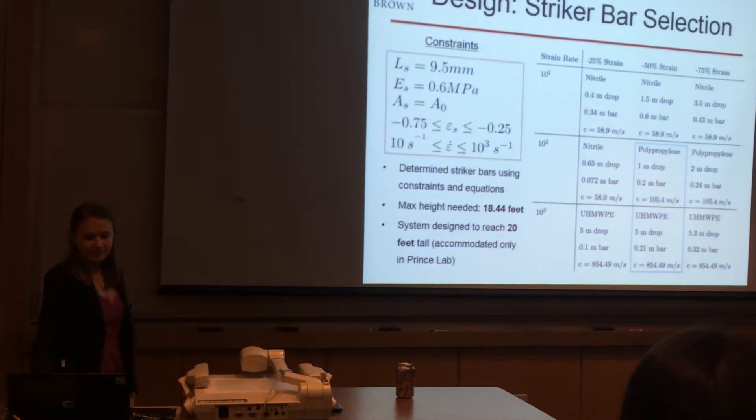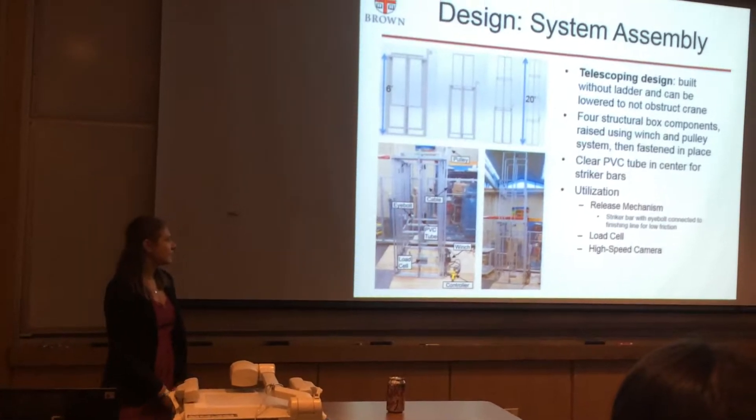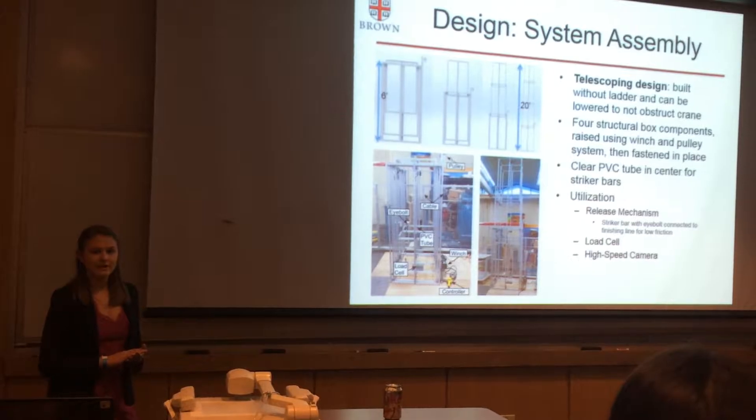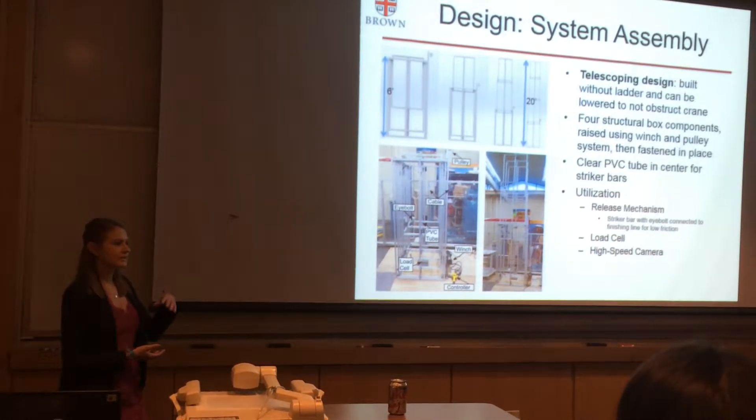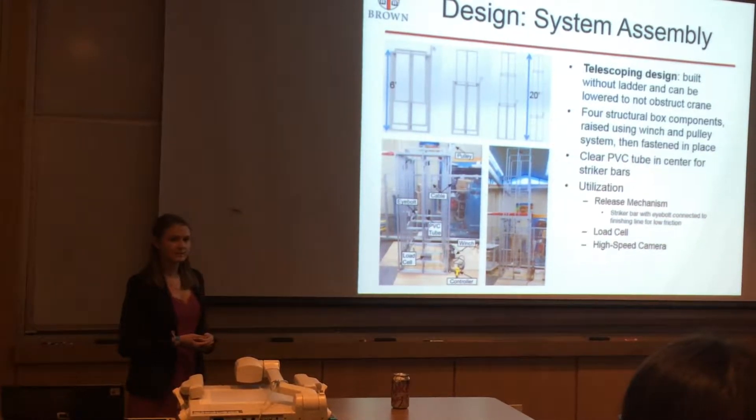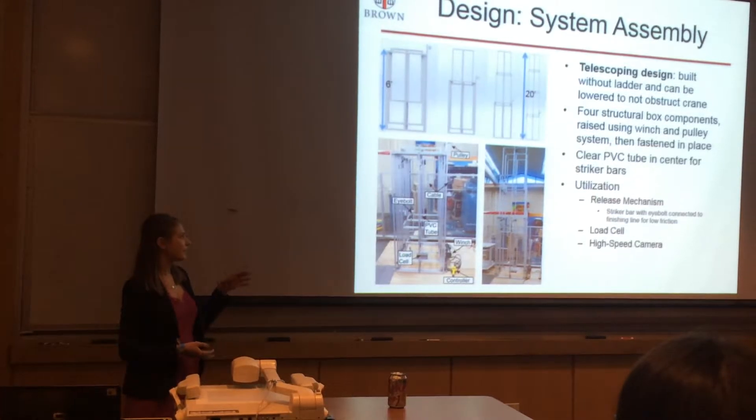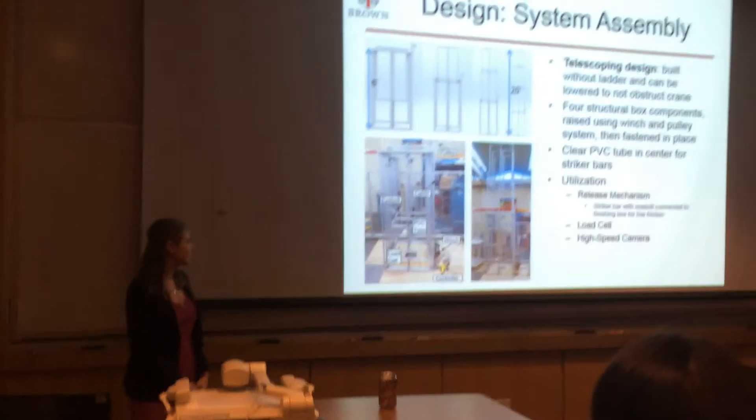Because it was in Prince lab there are certain considerations that had to be made. First of all it needed to be built without a ladder for safety reasons and it needed to be able to be lowered down so that the crane that's used in Prince lab wouldn't be obstructed. It's a telescoping design that utilizes four box components nested within each other and raised one at a time using a pulley and winch assembly.